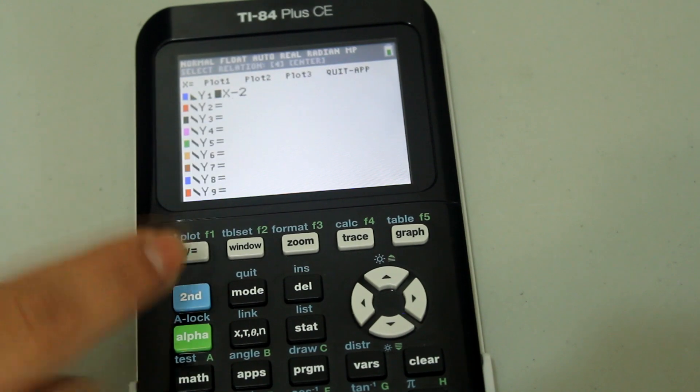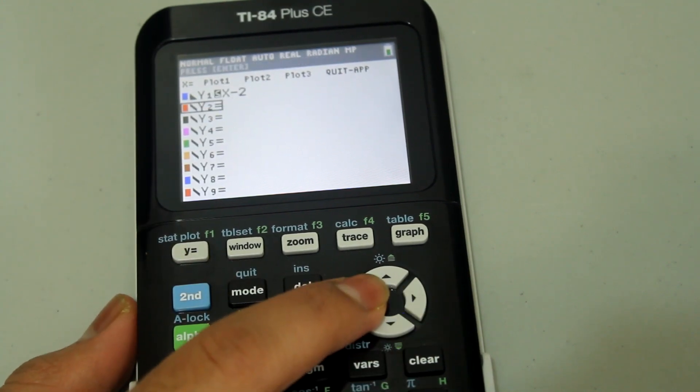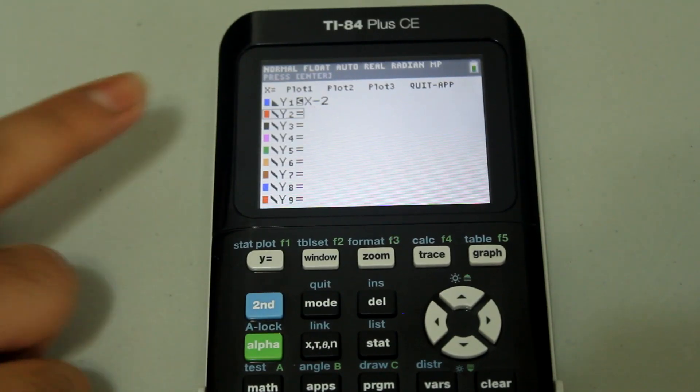If you wanted to have additional inequalities, follow the same procedure. Once the black box is flashing, hit enter.